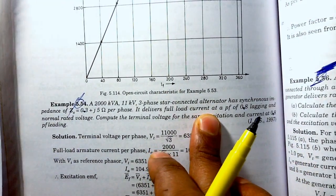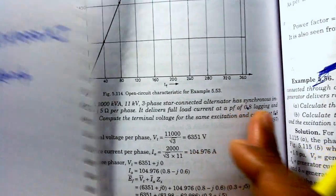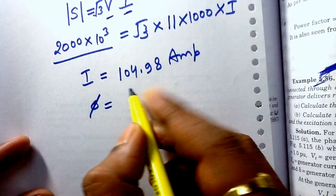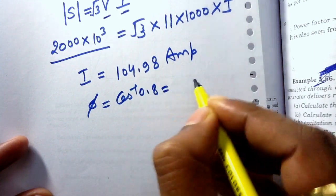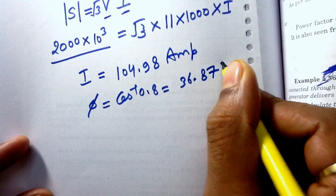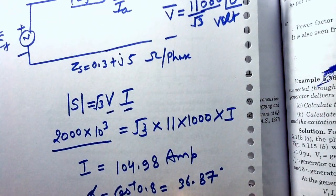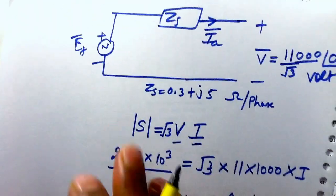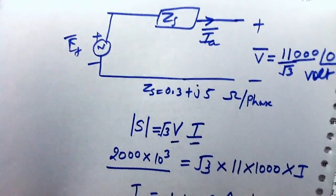The machine delivers full load current at a power factor of 0.8 lagging. We can calculate the angle phi: phi = cos⁻¹(0.8) = 36.87°. Our first aim is to calculate the value of the internal EMF.